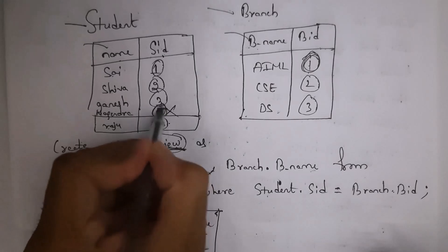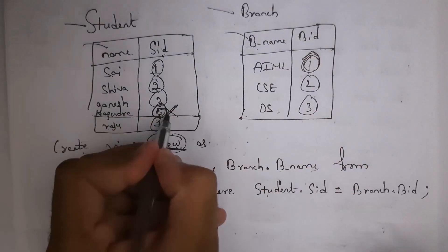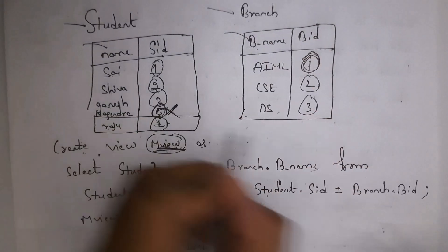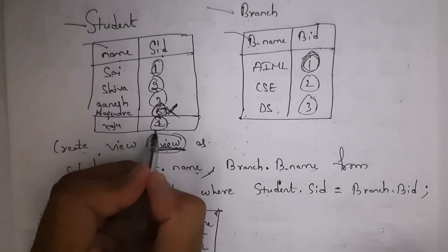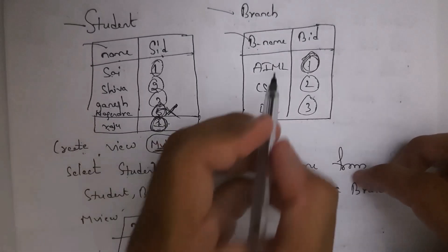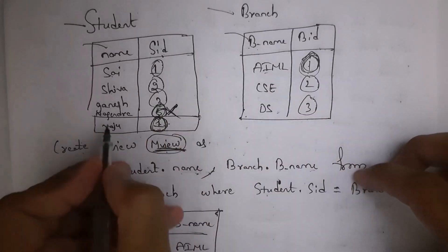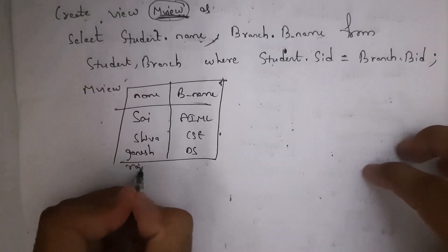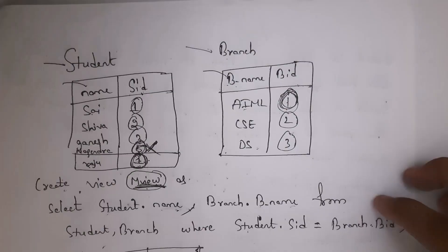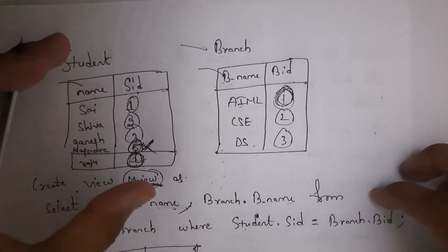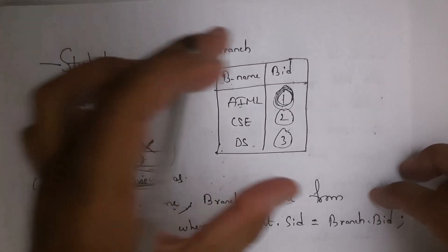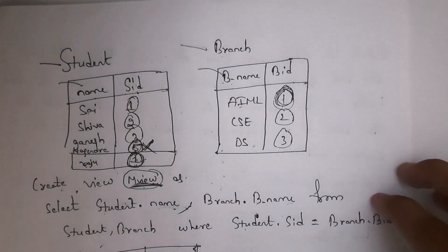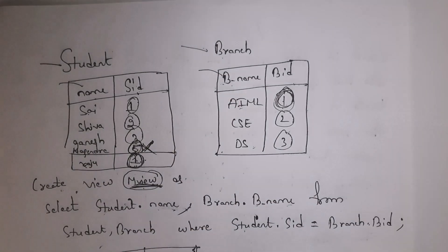For Raju the SID is 1, and for AML the BID is 1 — so it will select Raju and AML. Here I created a view by selecting multiple tables: student table and branch table — so we call this a complex view. A complex view is nothing but creating views from multiple tables. That's all about views.